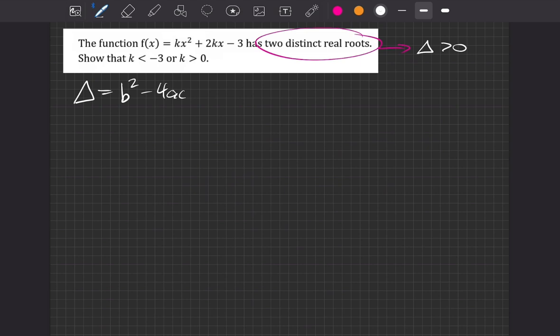Next step then, what are our a, b and c? Well, our a is going to be the coefficient of the x squared, which is k. Our b is the coefficient of the x's, so that's 2k. And our c then, that's the coefficient of the constants, so that's just minus 3.